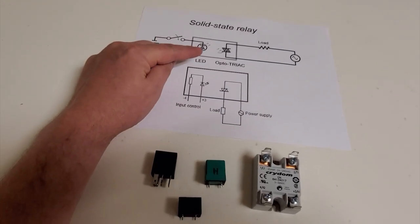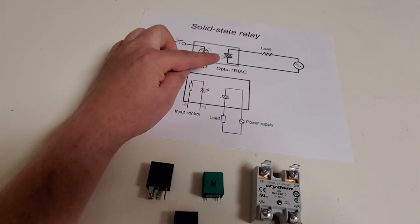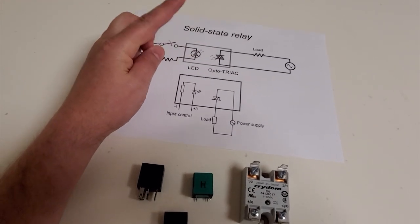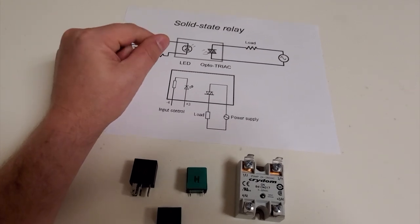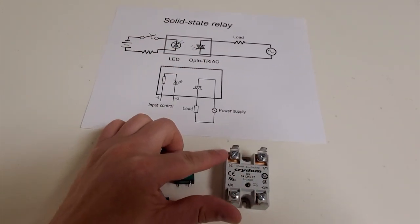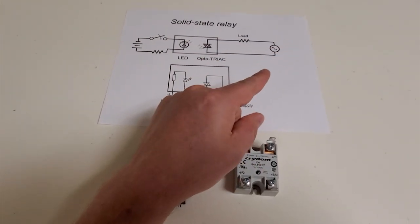And what it does is it illuminates an internal LED, which comes over here to an opto triac. And a triac allows current to move in one direction or the other, it doesn't matter, which is why they're perfect for switching AC. And you can see what it does is it activates these two pins on this side, basically closing the switch and allowing the motor to turn on.